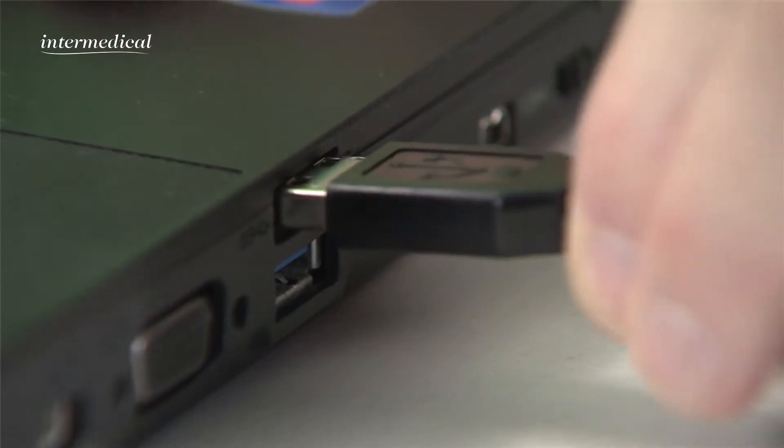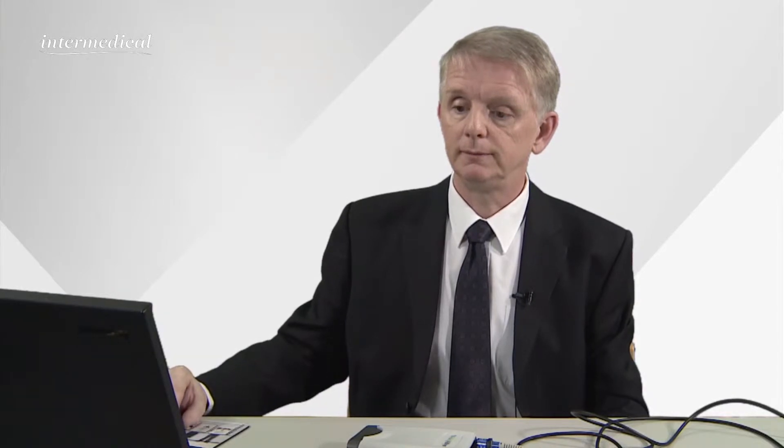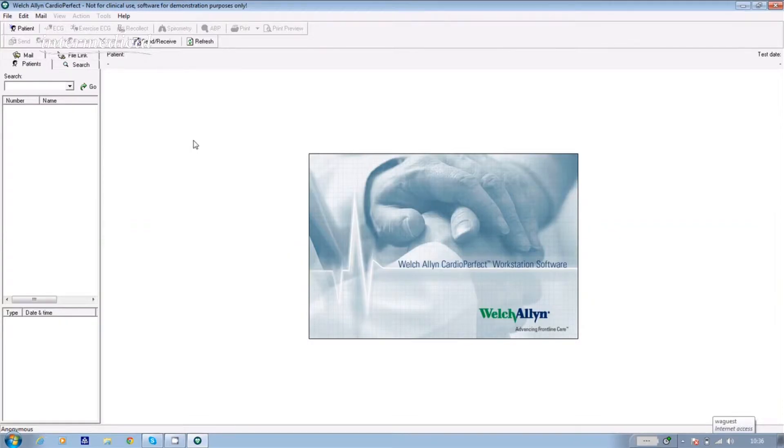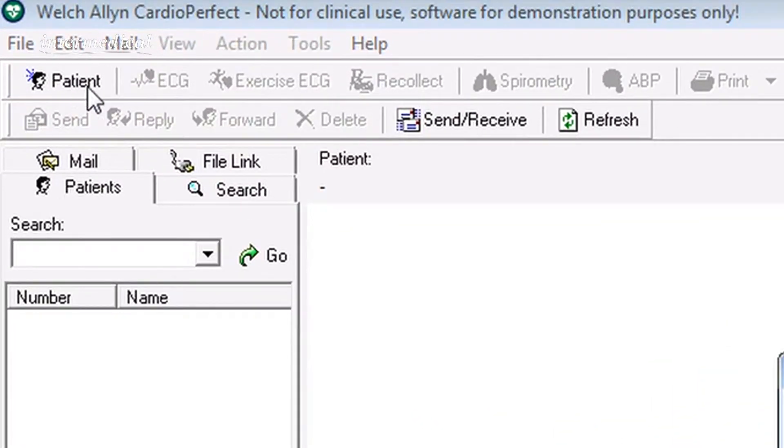Now connect the USB cable to your PC and go into the CardioPerfect software. Double click on the icon and if the patient hasn't had an ECG before, click on patient in the top left hand corner of the screen.